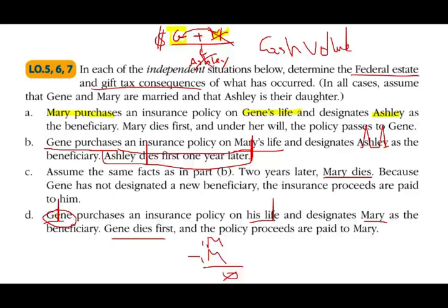Hopefully this exercise clarified certain concepts. Rather than giving you the information in one statement, the exam can give you an exhibit — the actual insurance policy — and tell you who is the owner, who is the beneficiary, and who purchased it. It is simply the same information given to you in a different format.